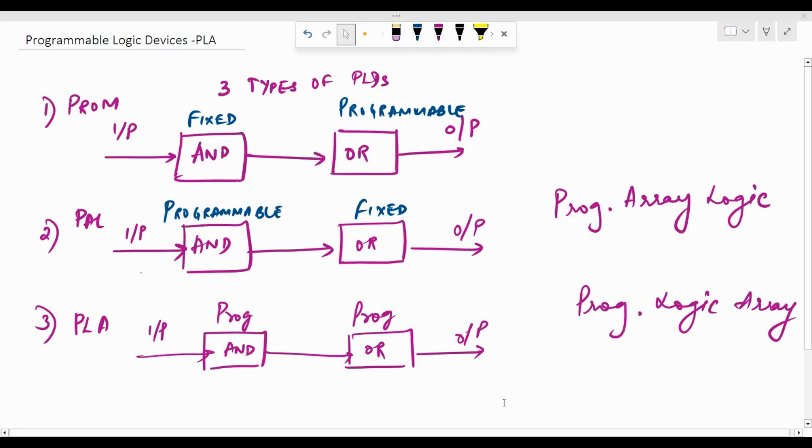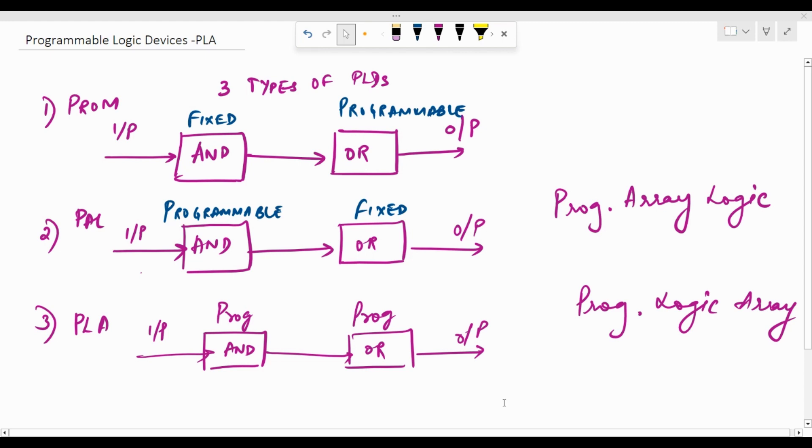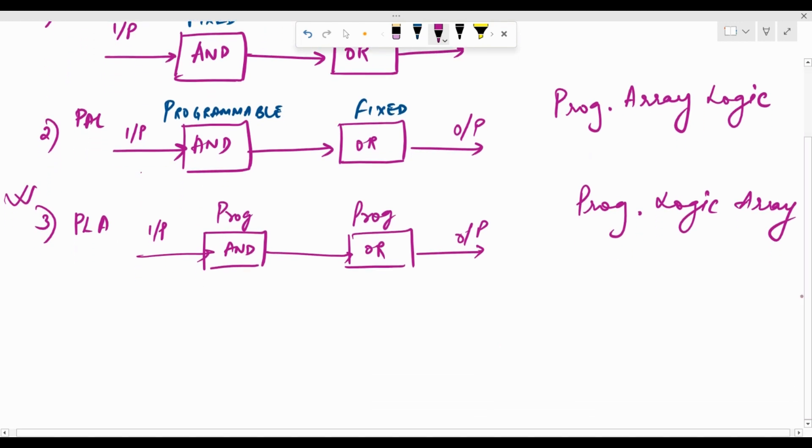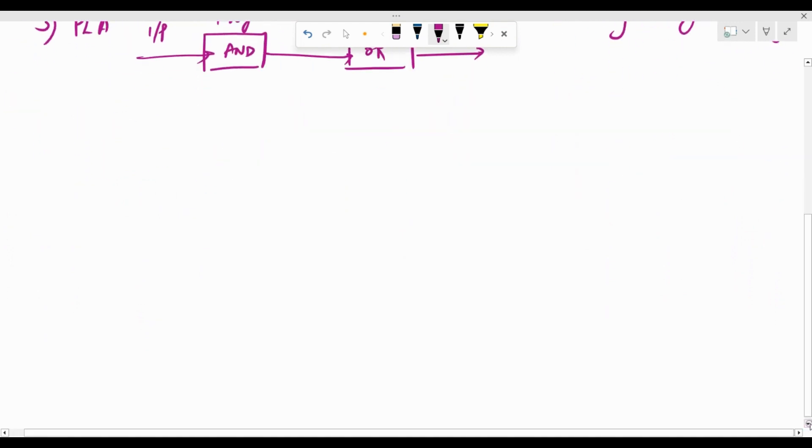In the previous video I showed you the basics of PLDs and the types of PLDs. We know that there are three types. The first one was PROM where we had an AND array and OR array, out of which the AND array was fixed but the OR array was programmable. Today we're going to look at PLAs or Programmable Logic Array, the third one where both the AND array and the OR array are going to be programmable.